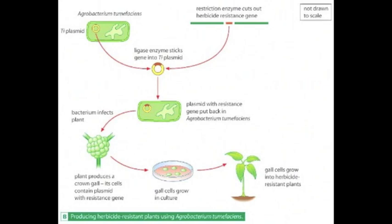The Agrobacterium cell has a small loop of DNA called the Ti plasmid — Ti stands for tumour-inducing. The herbicide resistance gene is inserted into the Ti plasmid. The plasmid causes a plant infected with Agrobacterium to produce a crown gall, and the cells of the gall each contain a Ti plasmid with the herbicide resistance gene in place. Pieces of tissue cut from the crown gall are then cultured and grown into plants, each genetically modified to be resistant to herbicide.